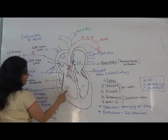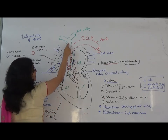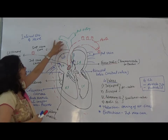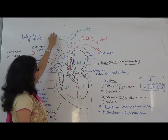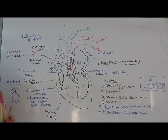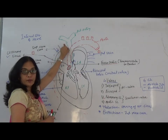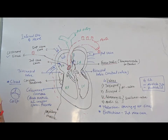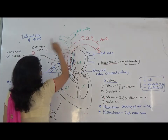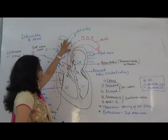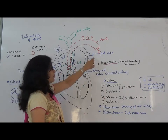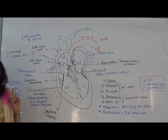From the right ventricle, blood goes into the pulmonary artery for oxygenation, delivering blood to the lungs. The pulmonary artery is the only artery that carries deoxygenated blood — all other arteries carry oxygenated blood. After oxygenation in the lungs, the oxygenated blood returns to the left auricle via the pulmonary vein. The pulmonary vein is the only vein that carries oxygenated blood, while all other veins carry deoxygenated blood.